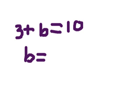10 minus 3, which is obvious because it's a simple question. So 10 minus 3 is 7. So if you add 7 plus 3, that will equal 10. So 7 equals b.